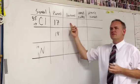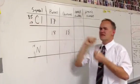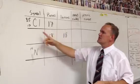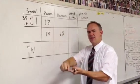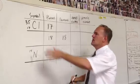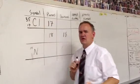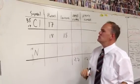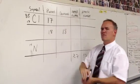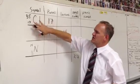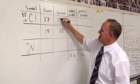Then the number of neutrons — a lot of you are going to put 35 there, but that's not correct. Remember, the number of neutrons is not the top number. That top number is what you get if you add the protons to the neutrons. So we know that if we add 17 to the neutrons, we get 35. We've got to subtract: 35 minus 17. The difference in those two numbers will always be the neutrons — that would be 18.